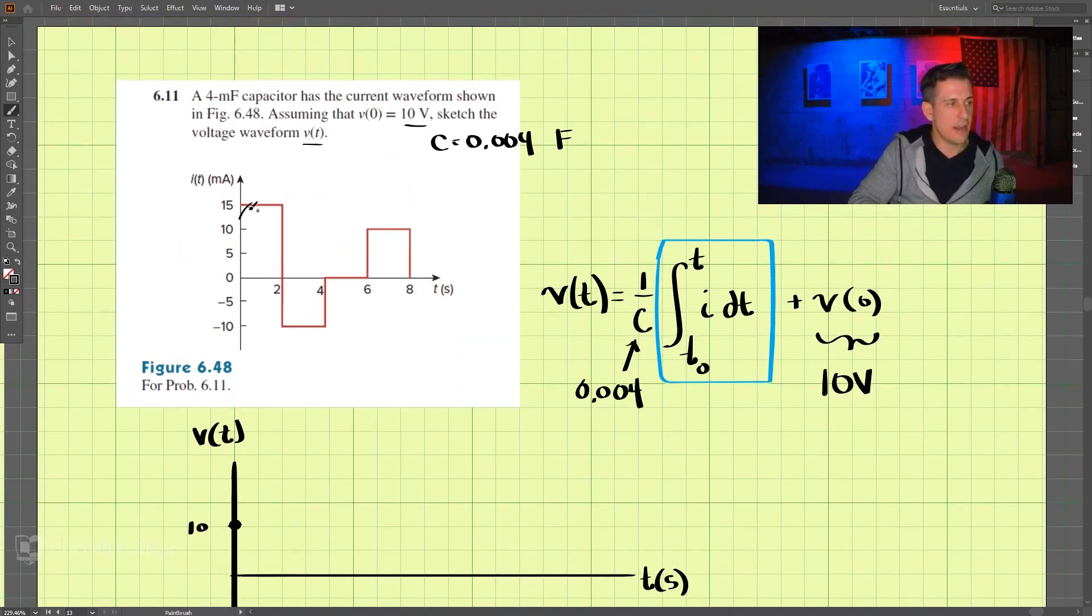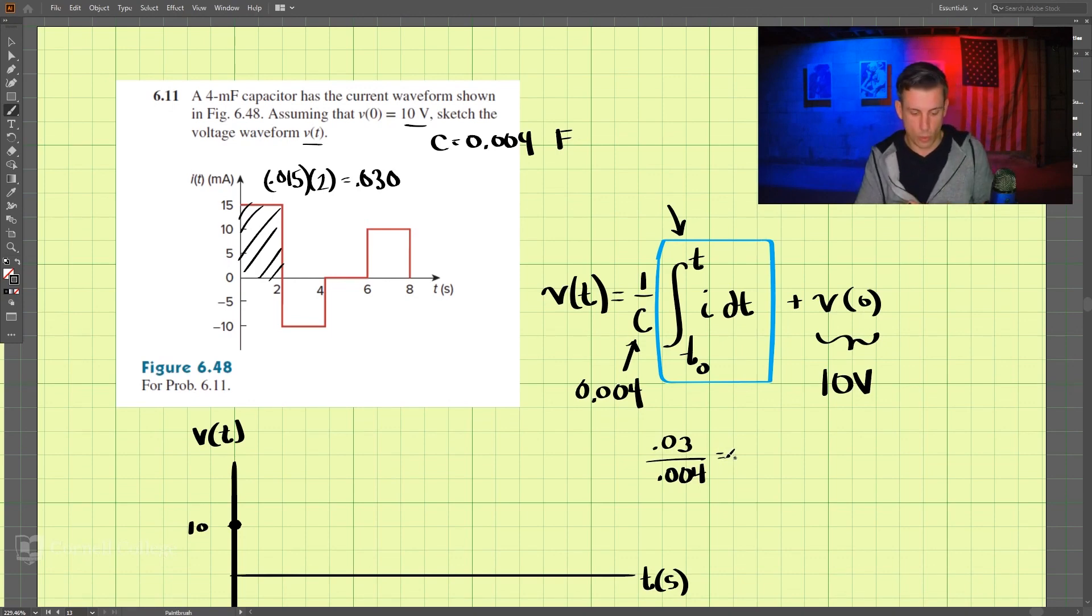Now if we take this area here, let's find the area of this, and this is milliamps, so that is 0.015 times our 2 seconds. So that is equal to 0.030, so that is what this value comes out to be, 0.030 here, and then we divide it by the 0.004. So for this value, we have 0.003 divided by our 0.004, which comes out to be 0.03 divided by 0.004, 7.5.